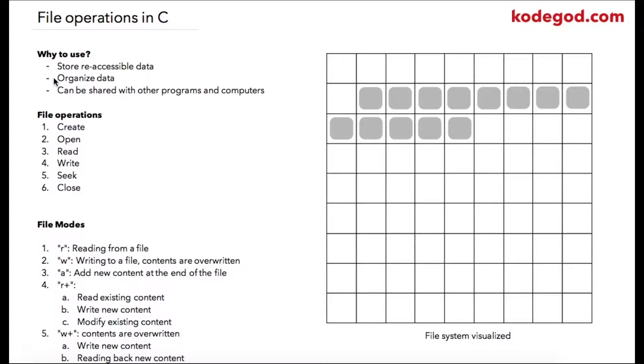Another advantage of using files is that your files can be shared with other programs and other computers. For example, when you create a file in C that file can be opened in any text editor. So that is how we can re-access the data and it can be shared with other programs and computers. These are main important advantages of using files in C language.